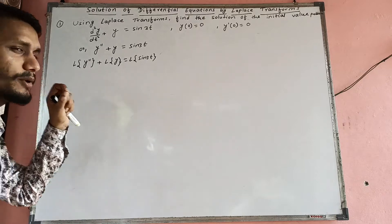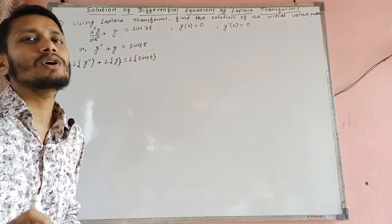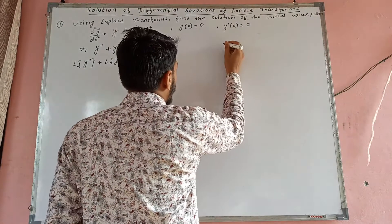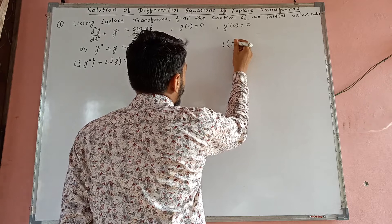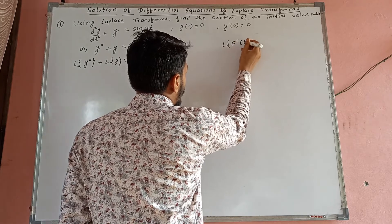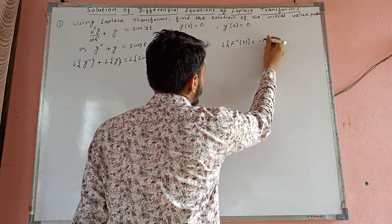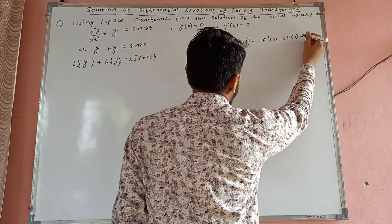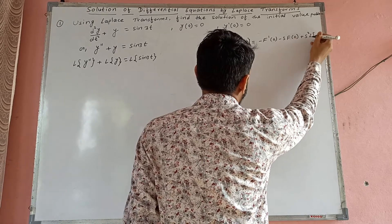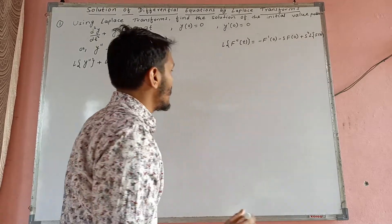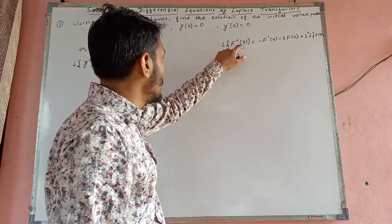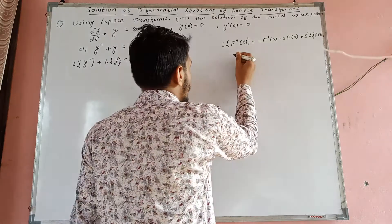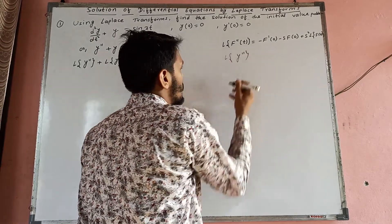Aaba y double dash sa banne po si f(t) ko second derivative hoyo. Second derivative ko yaha formula cha: Laplace transform of f''(t) = s² times Laplace transform of f(t) minus s times f(0) minus f'(0).